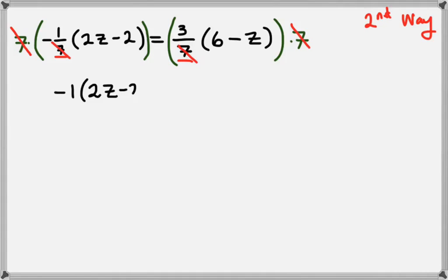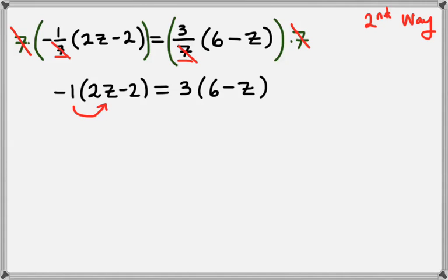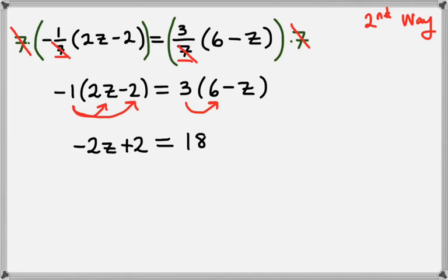On the left that leaves us with negative 1 times 2z minus 2, and on the right that leaves us with 3 times 6 minus z. Now let's go ahead and distribute. Negative 1 times 2z gives us negative 2z, and negative 1 times negative 2 gives us positive 2. On the right hand side, 3 times 6 is 18, minus 3 times z gives us minus 3z.